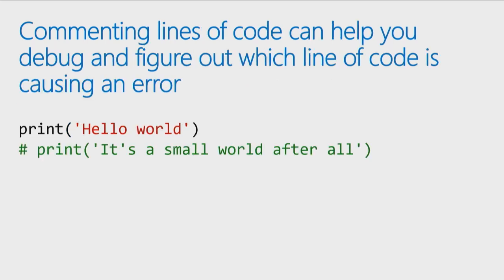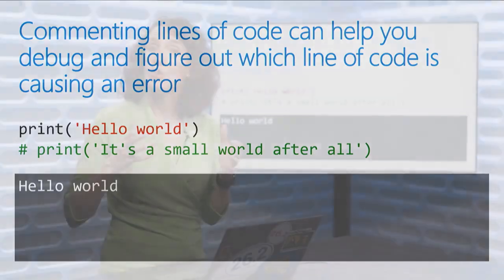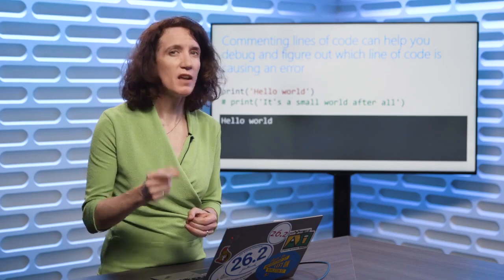Comments are also really useful when you're debugging your code. If you've got a long program and something's blowing up but you can't figure out which line isn't working, I've absolutely commented out a whole bunch of lines of code and checked if the first five lines worked. If they did, uncomment the next five — still no error? Uncomment the next five, and so on until I see the error message. That helps me narrow down where in the code my error is coming from. So get in the habit right away of using comments in your code, both for documenting what you've done and for debugging.